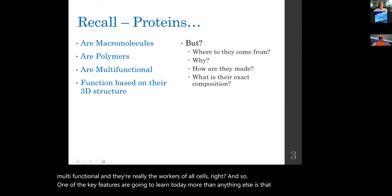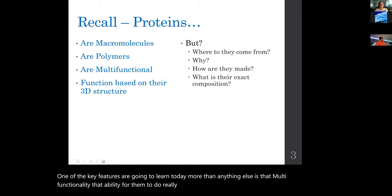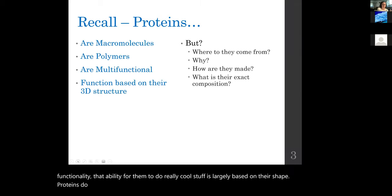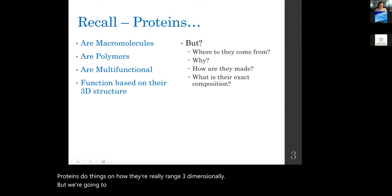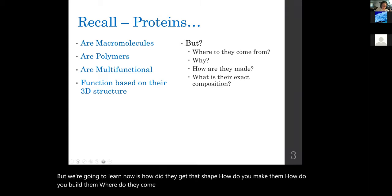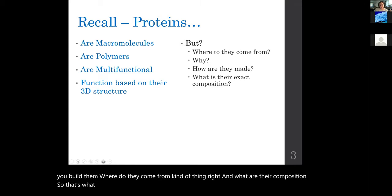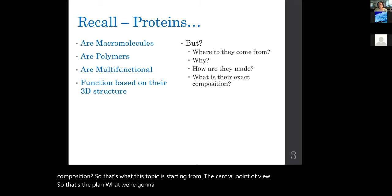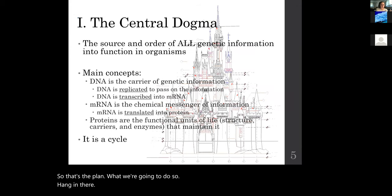One of the key features you'll learn today is that that multifunctionality — that ability to do really cool stuff — is largely based on shape. Proteins do things based on how they're arranged three-dimensionally. What we're going to learn now is: how do they get that shape? How do you make them, build them, where do they come from? That's what this topic covers from the central dogma's point of view.